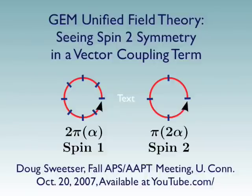I'm going to focus on a specific technical problem that is seeing spin two symmetry in the vector coupling term. I'm going to spend most my time explaining the unified field theory because I think the logic is very simple and direct.